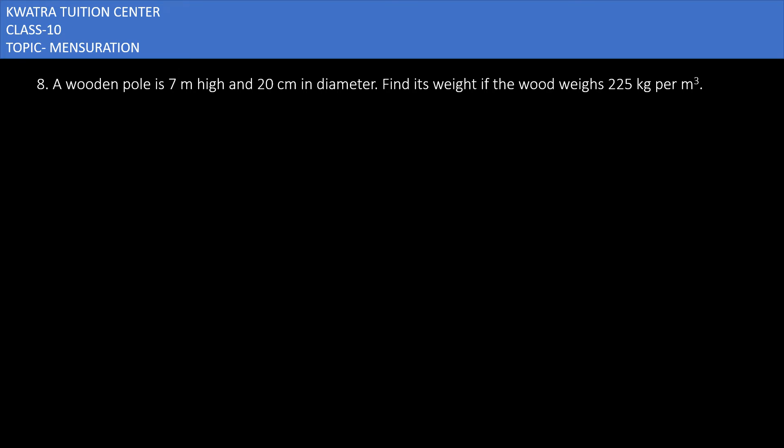Question number 8 says that a wooden pole is 7 meters high and 20 centimeters in diameter. Find its weight if the wood weighs 225 kg per meter cube. You can see that height is there which is 7 meters.